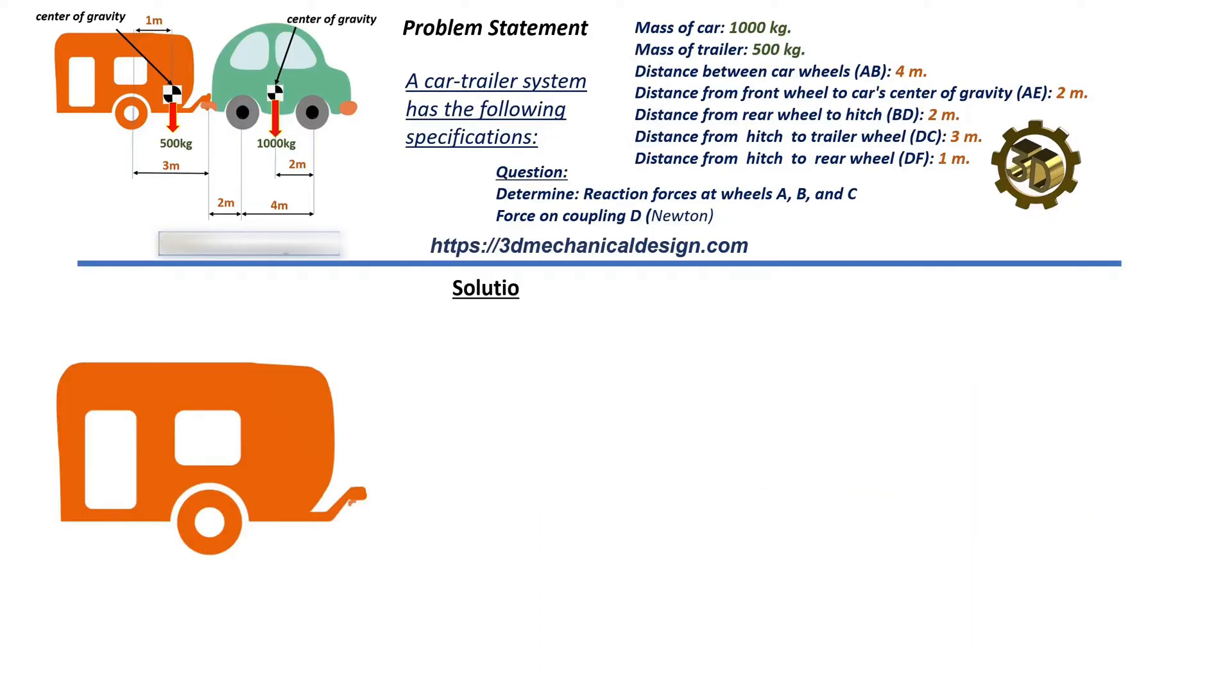Solution. Step 1: Calculate weights. Let's calculate the weights of the car and trailer. Weight of car equals 1,000 kg times 9.81 equals 9,810 newtons. Weight of trailer equals 500 kg times 9.81 equals 4,905 newtons.